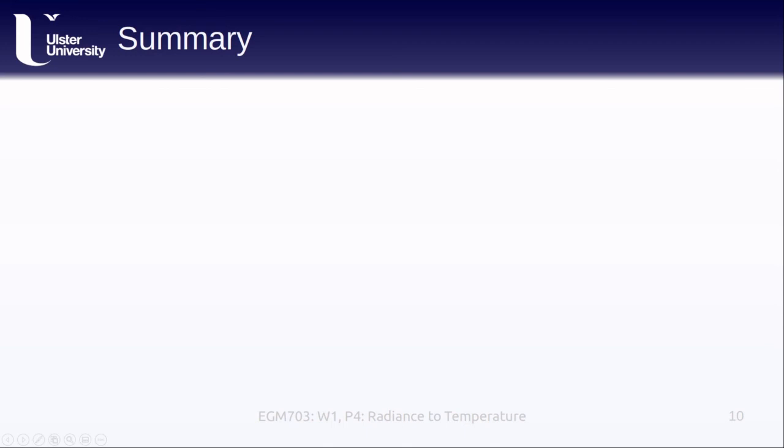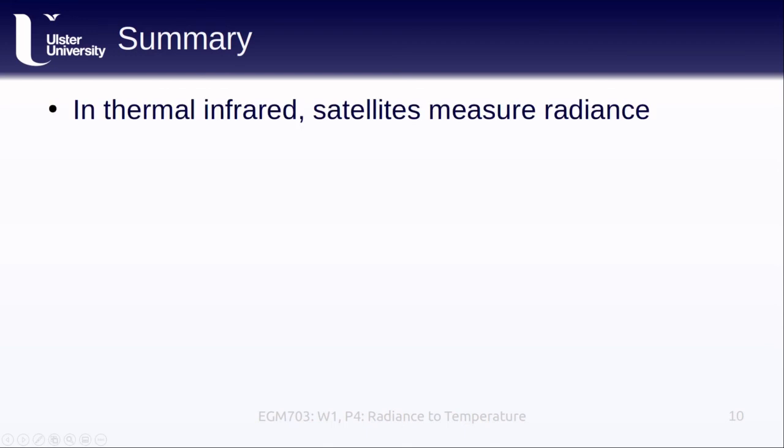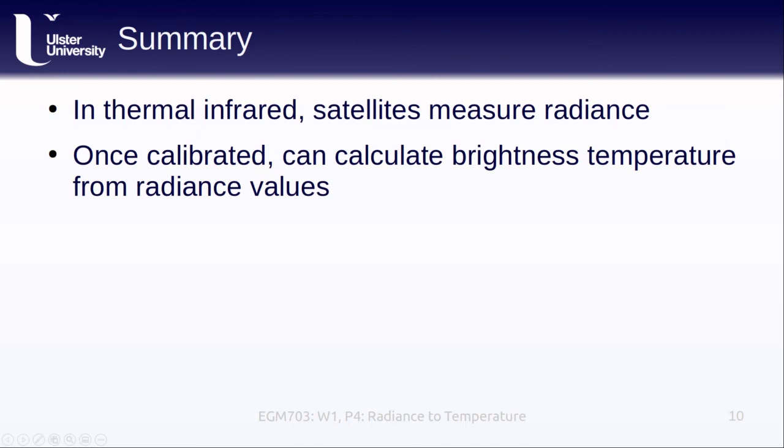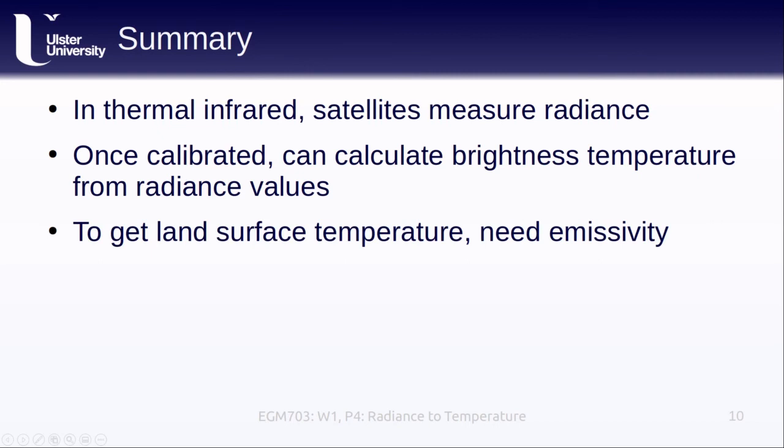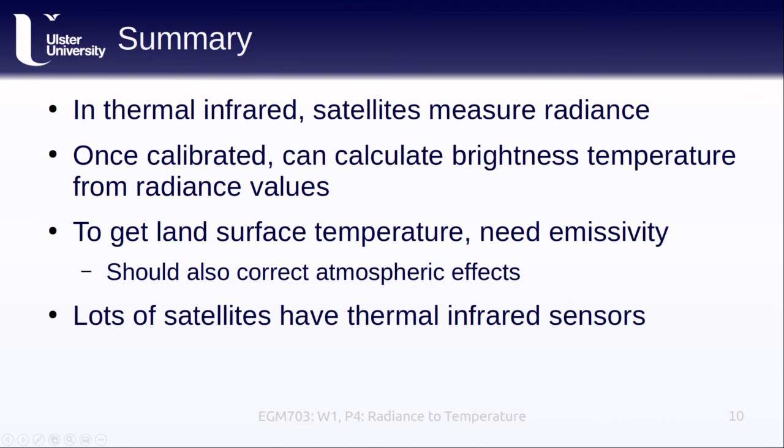As we've seen, in the thermal infrared, satellites measure the radiance emitted by the earth's surface. Once we have calibrated these measurements, we can calculate the brightness temperature using the measured radiance and by inverting Planck's Law for blackbody radiation. In order to calculate the land surface temperature, though, we need to know the emissivity of the surface. We should also correct for atmospheric effects, which we'll discuss more in the next lesson. We also looked at a few different sensors that provide thermal infrared data. These are, of course, not the only options.